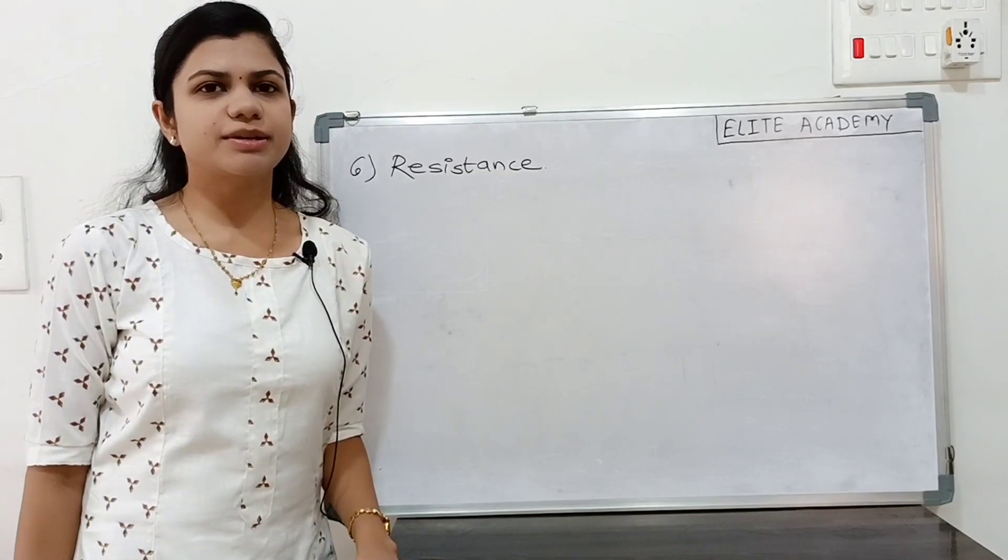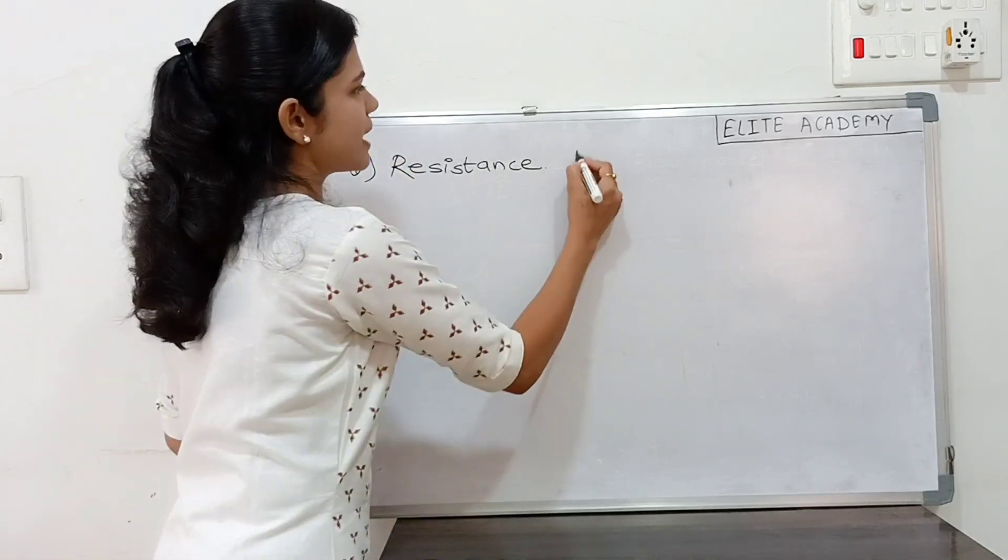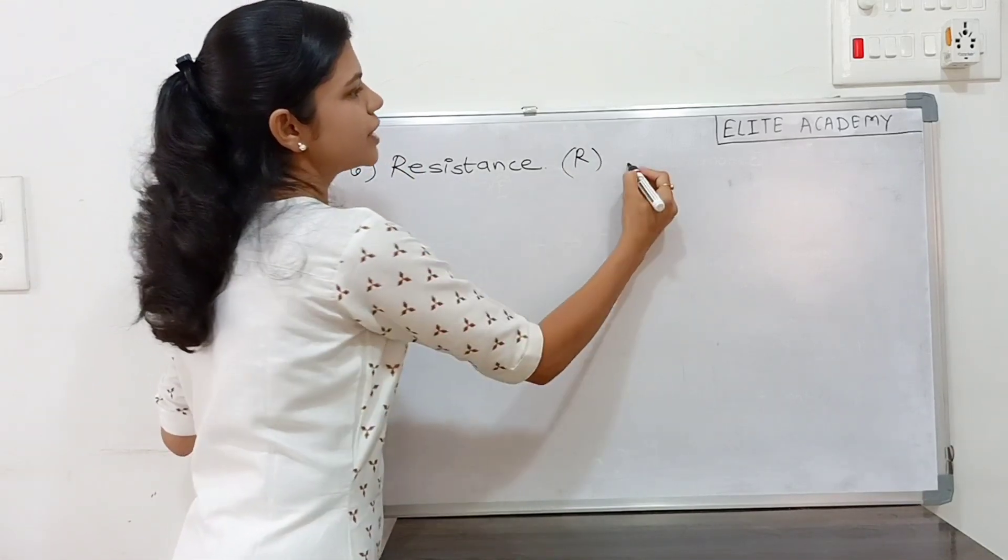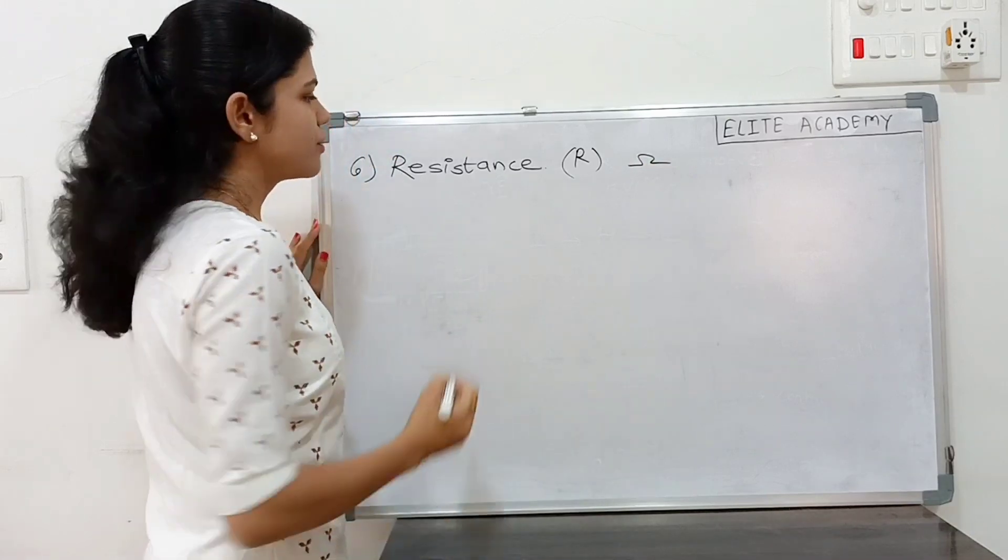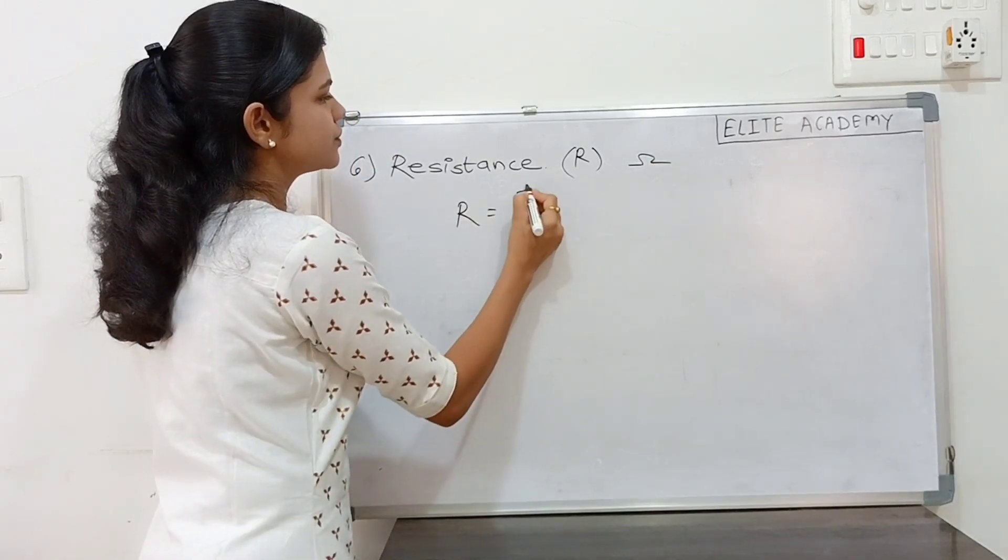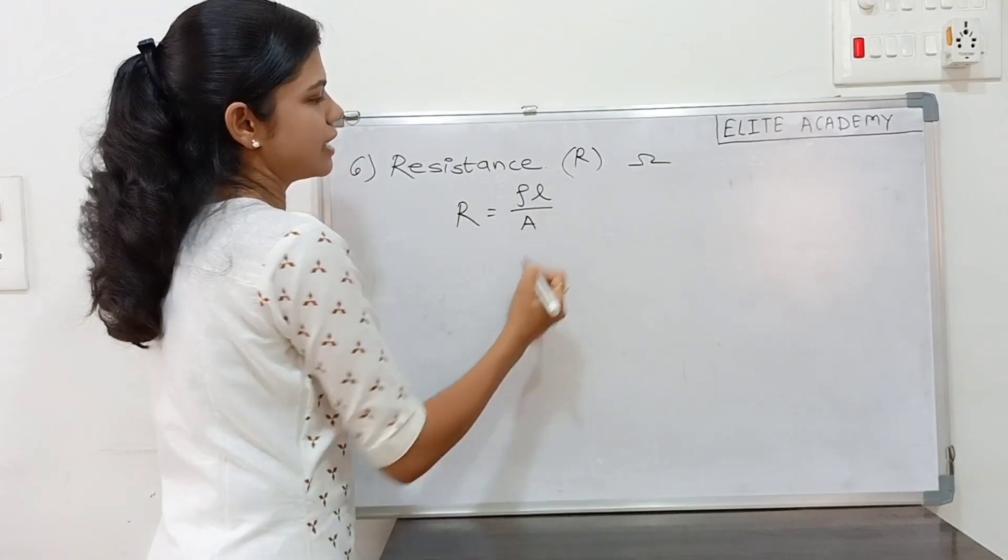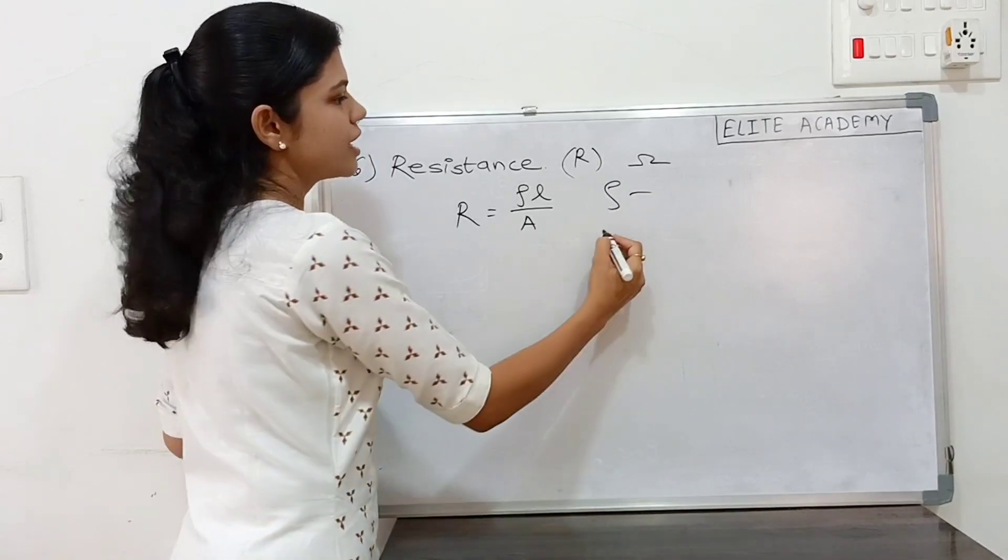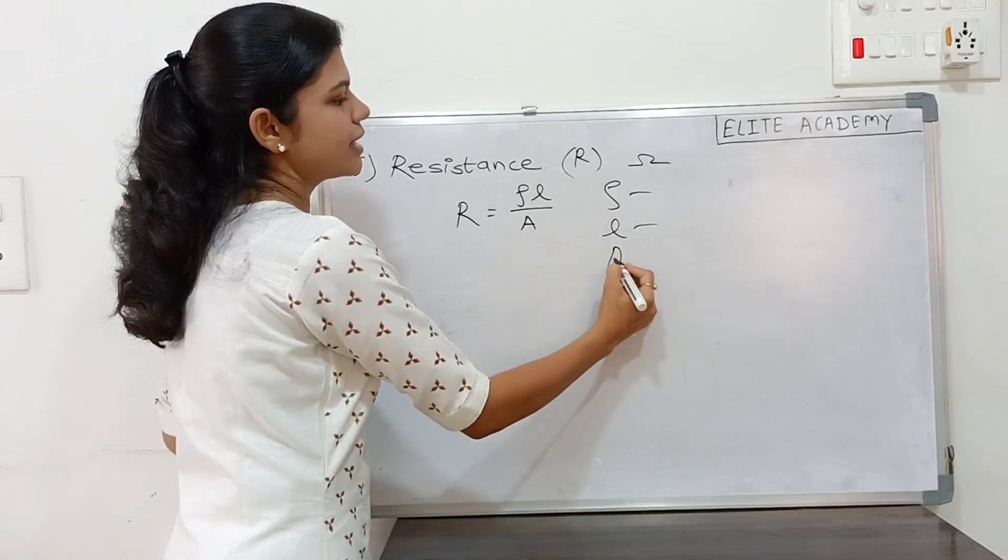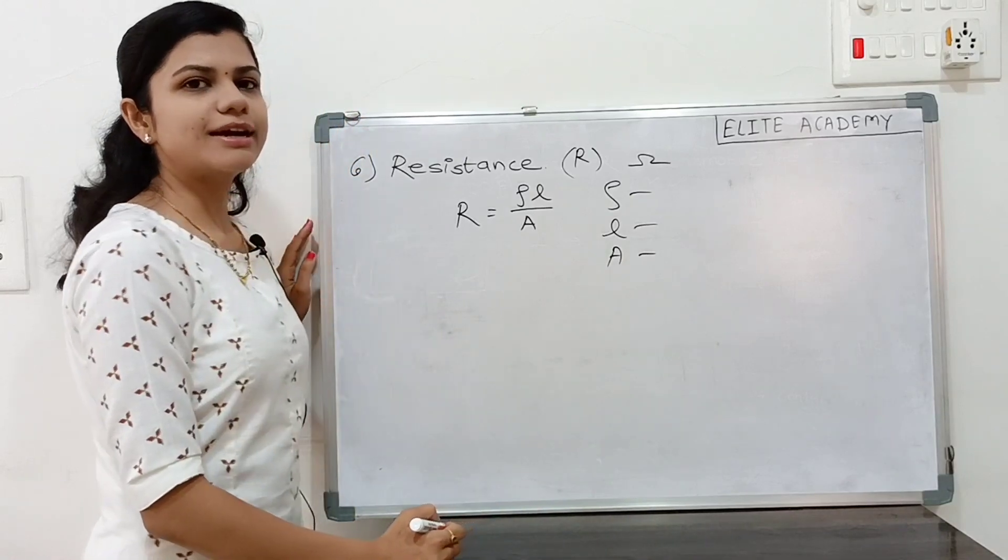Next concept is resistance. It is denoted by R. And unit is Ohm. Formula for resistance is equal to rho L by A. Where rho is the resistivity. L is the length. And A is the area of that material.